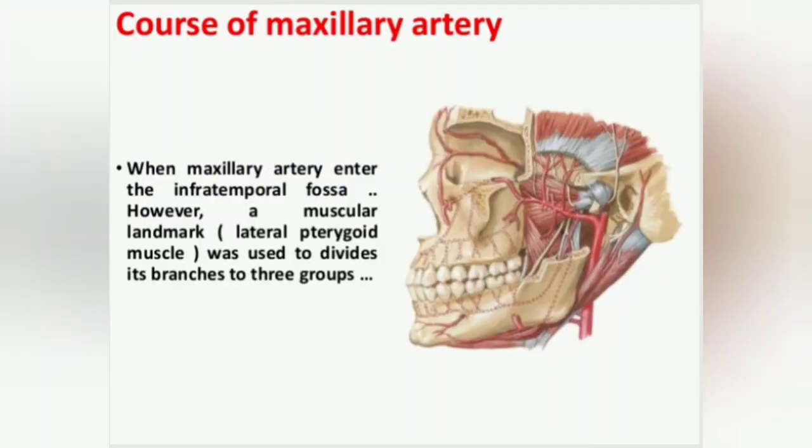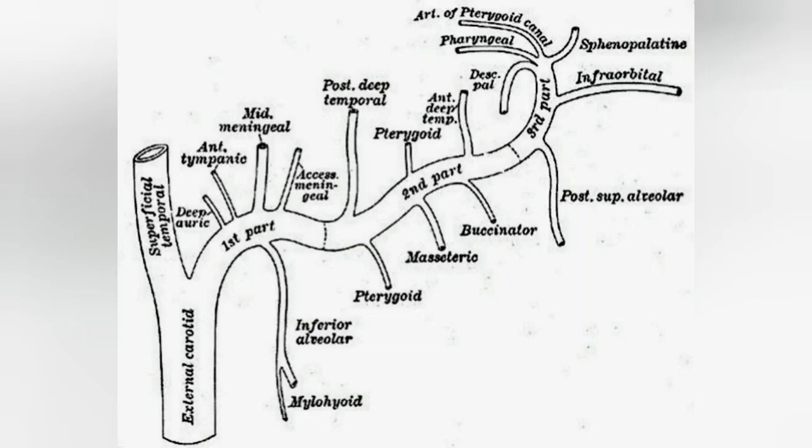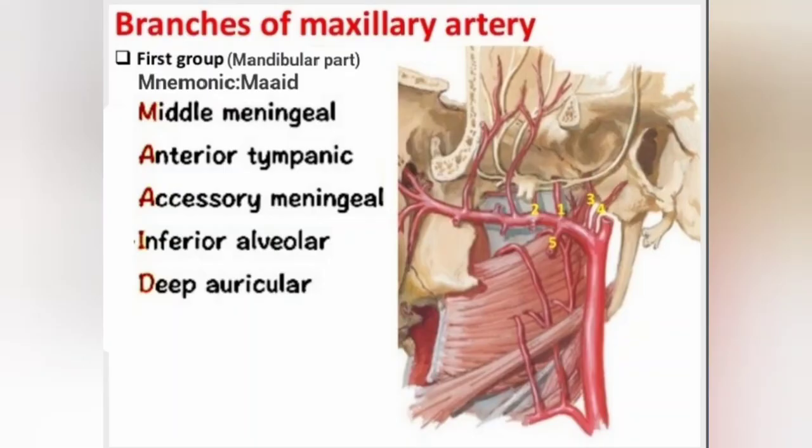Let's talk about the course of the maxillary artery. After entering into the infratemporal fossa, the maxillary artery is divided by the lateral pterygoid muscle into three parts. Let's talk about the branches of the maxillary artery. The first part is also known as the mandibular part.